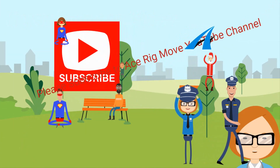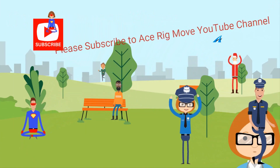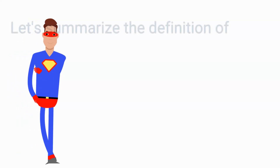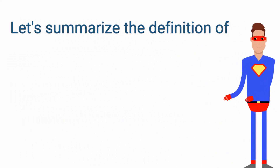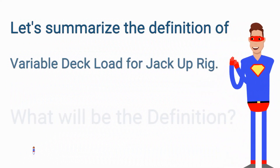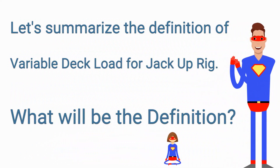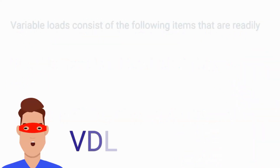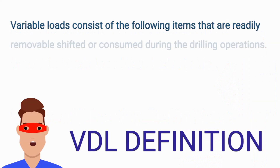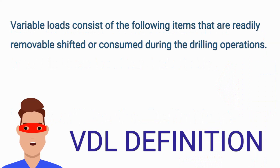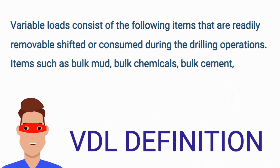Let's summarize the definition of Variable Deck Load for Jackup Rig. Variable loads consist of the following items that are readily removable, shifted or consumed during the drilling operations. Items such as bulk mud,